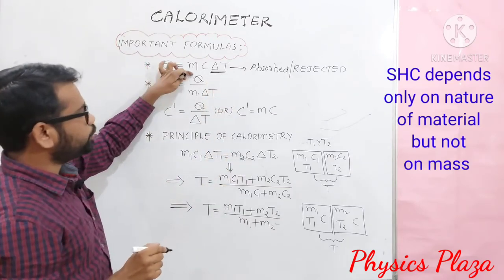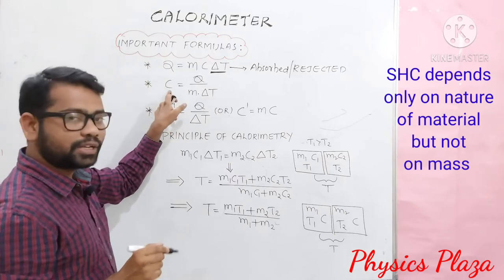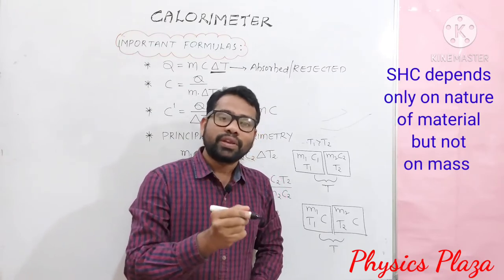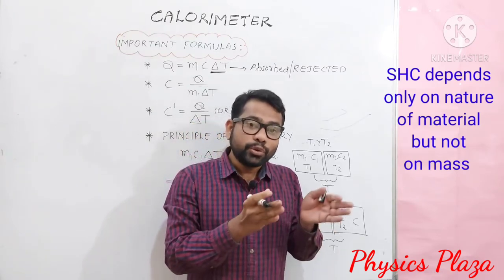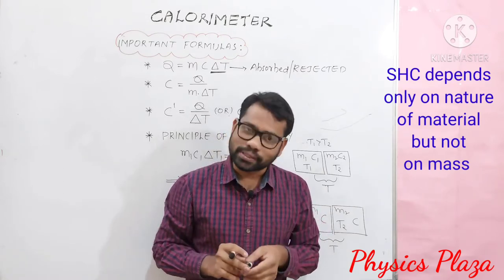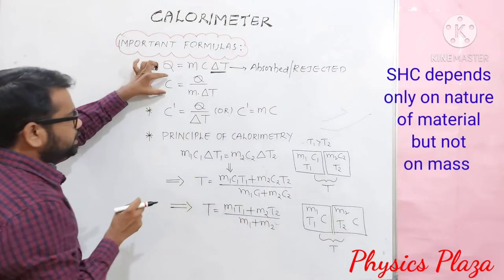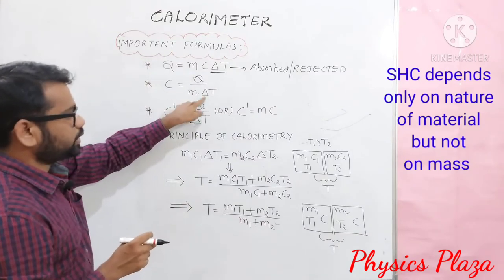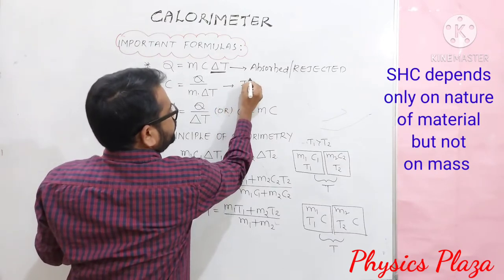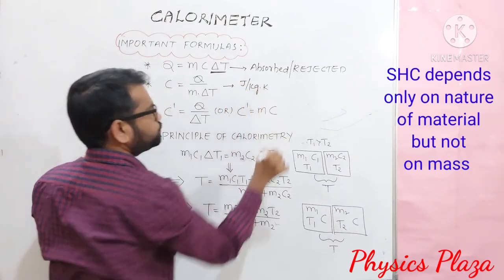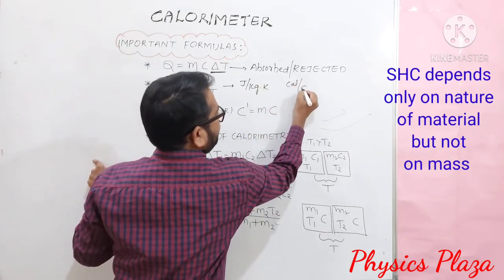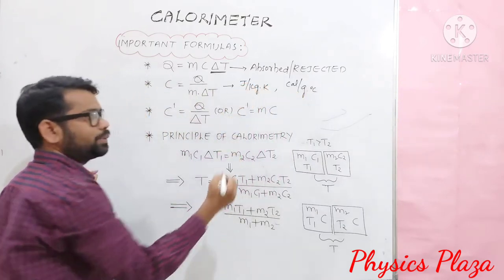Next, C is equal to Q by m delta t. What is C here? Specific heat capacity. The amount of energy required to raise the temperature of unit mass of a substance by 1 degree Celsius is called specific heat capacity. The SI units are joule per kg Kelvin, or CGS units are calorie per gram degree Celsius.